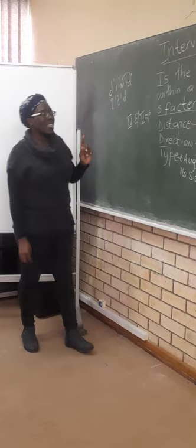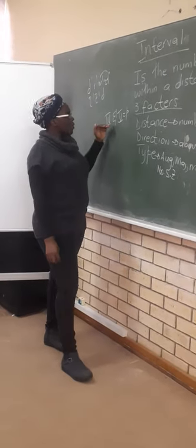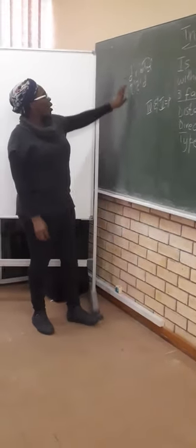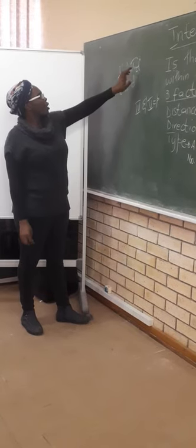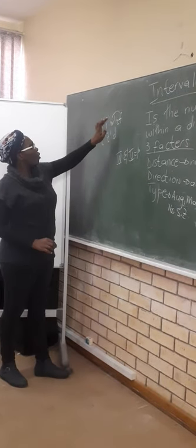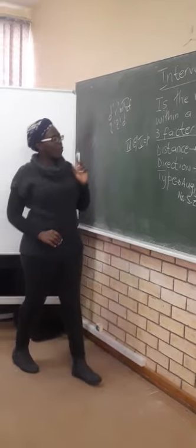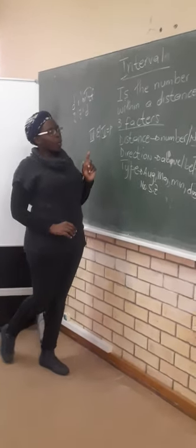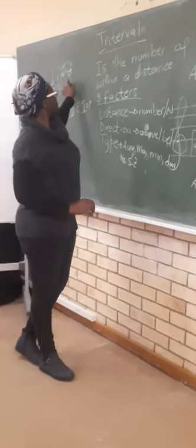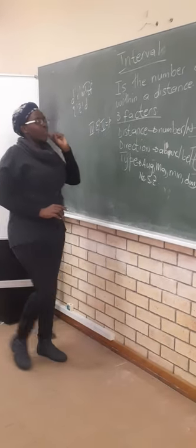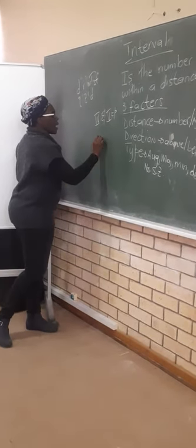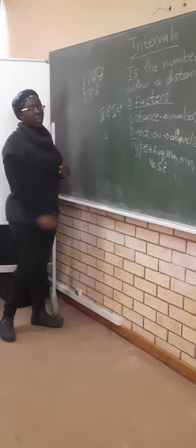We must first establish the perfect fourth. It has how many semitones? One, two, three, four, five. So for a perfect fourth you've got five semitones. And then for an augmented fourth, it means that you will now need six semitones. This is where our piano now comes in.